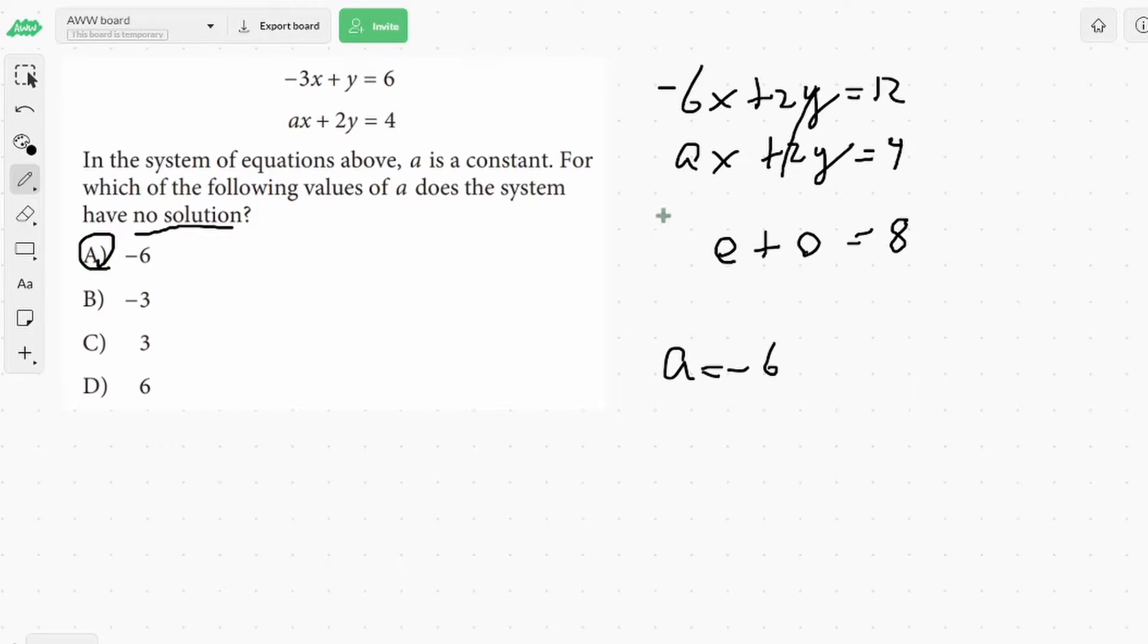But let's look more at this. So when they both cancel, we're left with 0 equals 8, and we see that this doesn't make sense. When both variables cancel and you're left with something that isn't true, we know there's no solution. So again, a equals negative 6 because they both cancel and we're left with something that isn't true. So let's try another problem with this.